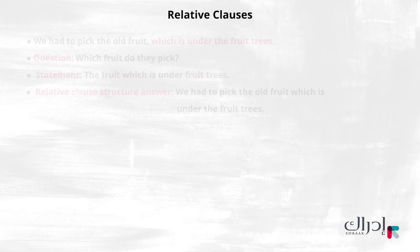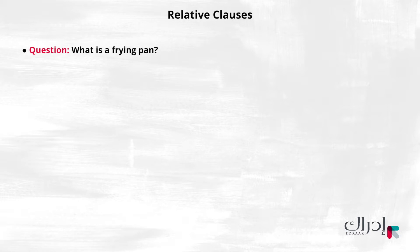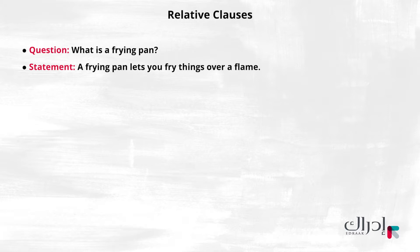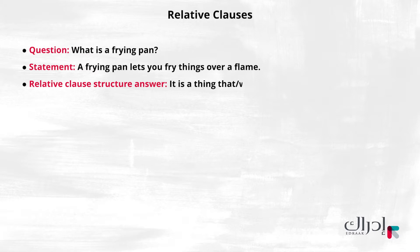Now look at another example. Question: What is a frying pan? Statement: A frying pan lets you fry things over a flame. Relative clause structure answer: It is a thing that, or which, lets you fry things over a flame.